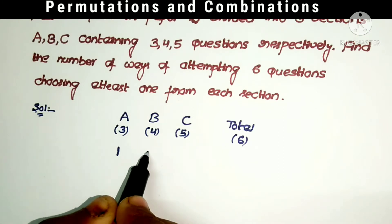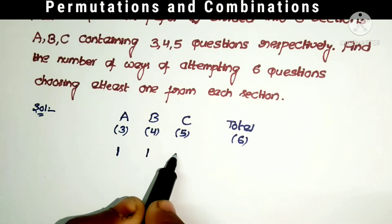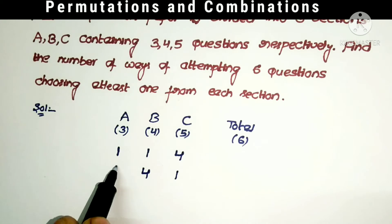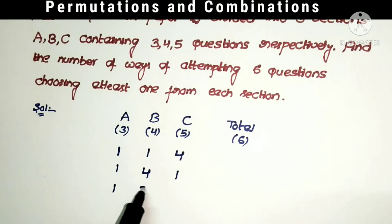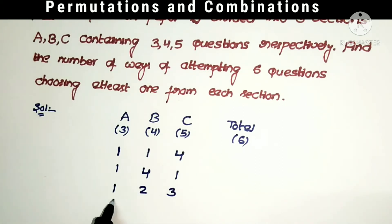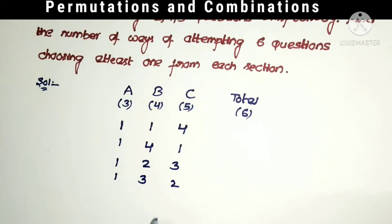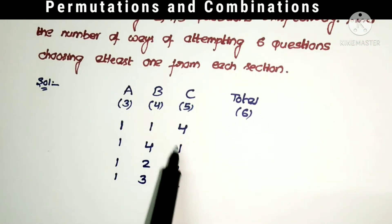What are the possibilities for selecting 5 questions from the remaining 2 sections? The combinations are: (1, 4), (4, 1), (2, 3), and (3, 2). These are the only possibilities to get 5 questions from the remaining 2 sections.